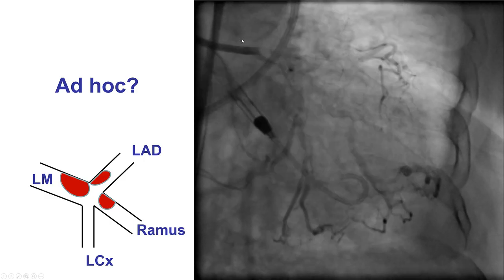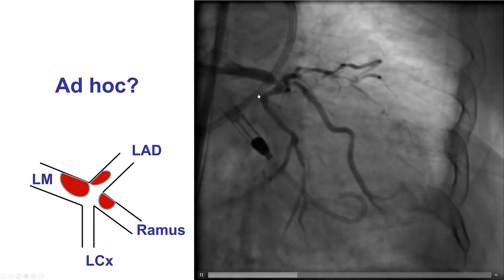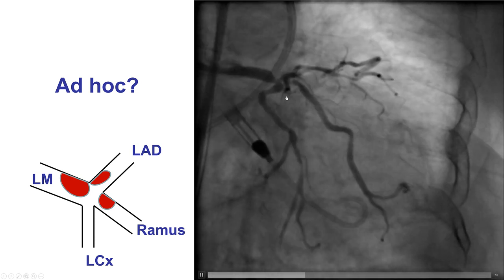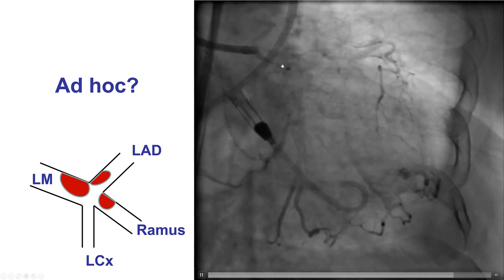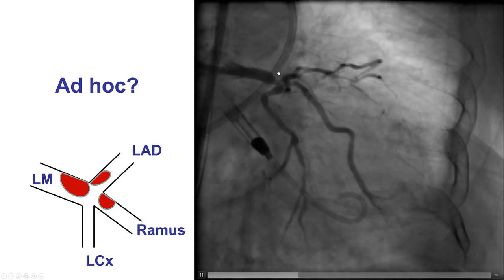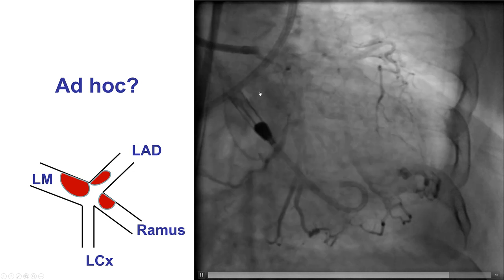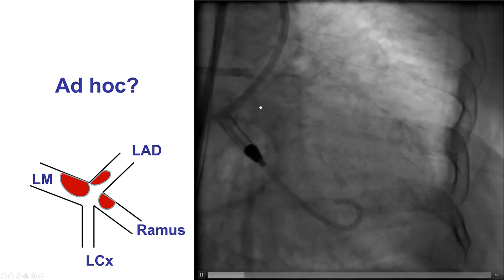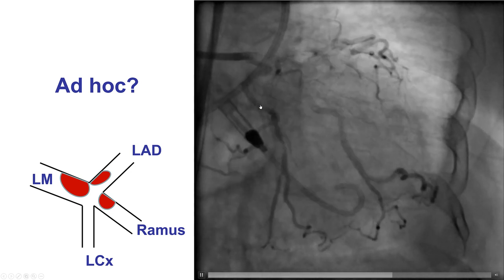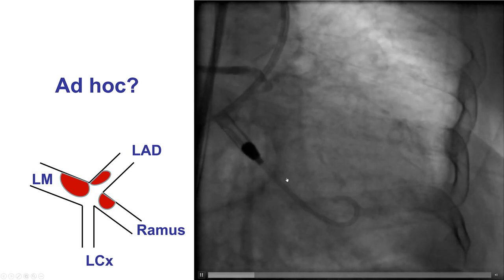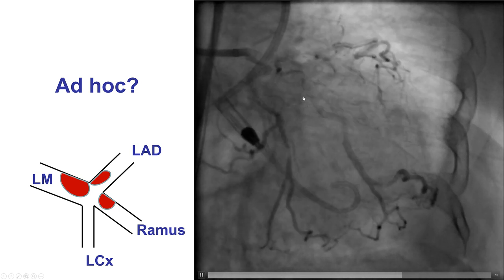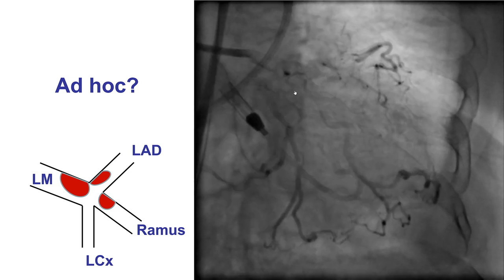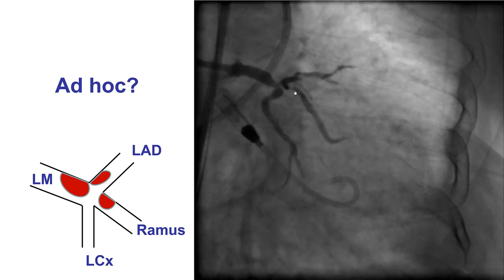This is an example of a patient with stable ischemic heart disease with a complex distal left main trifurcation lesion. These lesions should generally not be done ad hoc. This requires stopping the procedure, having a full discussion with the patient, and then bringing the patient back on a second occasion. There are fewer issues with radiation and contrast, and planning for hemodynamic support can be arranged, making outcomes better.